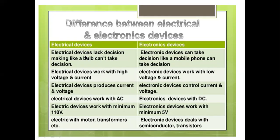Open circuit means your bulb is in off condition. And when your switch is in closed condition, then your application bulb is in on condition. In comparison, I explained that electrical devices can't take a decision — that is, they can't operate directly. For example, electrical motor, transformer, and generator are applications of electrical devices.